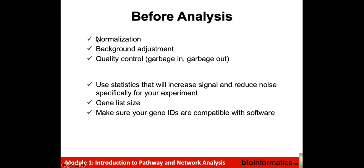These days, many genomics data types are handled by core facilities that typically have standard workflows they apply to the data, and they give you the result, which can then be directly input into pathway network analyses. Sometimes people run their own analyses in their lab, and frequently established workflows are available for these too. Occasionally there are new genomics data types where workflows might not be established, and then you need to know the latest in that area. For gene expression data, typically those are measured by a core facility and you'll just get the result as a gene list.